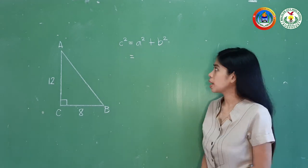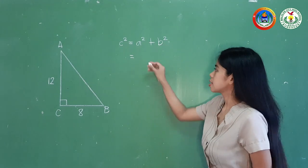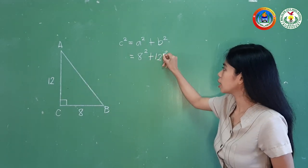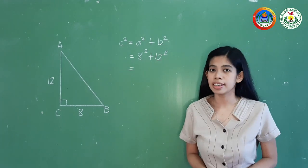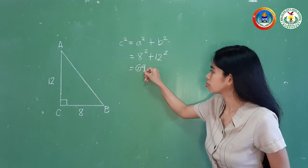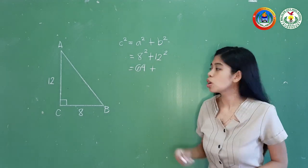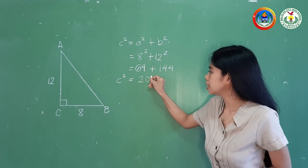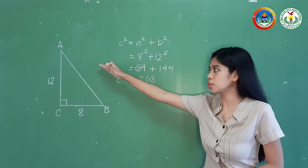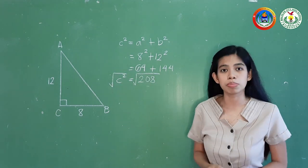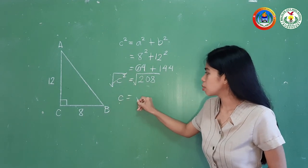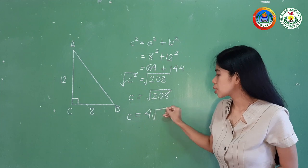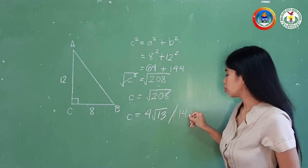Let us substitute the values. A and B can be either leg, so let A equal 8 and B equal 12: C squared equals 8 squared plus 12 squared, which is 64 plus 144, giving C squared equals 208. Extracting the square root of both sides, C equals the square root of 208, which is 4 root 13, or approximately 14.42 units.